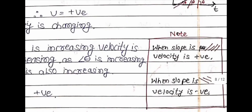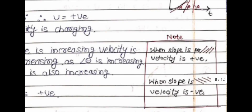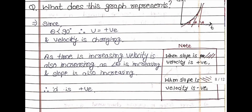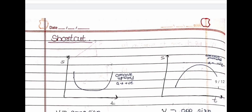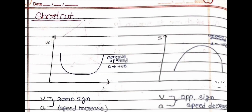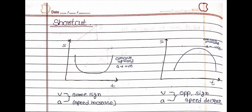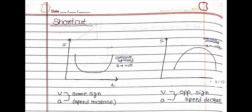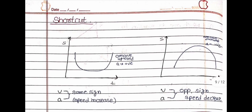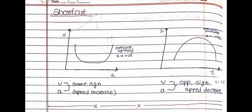One important note: when the slope is positive, velocity is positive; when the slope is negative, velocity is negative. Shortcut: when a speed-versus-time graph is U-shaped, acceleration is positive; when it is inverted U-shaped, acceleration is negative. If velocity and acceleration have the same sign, speed increases; if opposite signs, speed decreases.